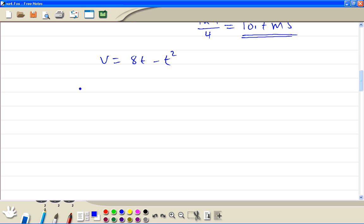So v equals 8t minus t². When t is 0, the velocity is 0. When t is 1, 8 minus 1 is 7. When t is 2, 16 minus 4 is 12. When t is 3, 24 minus 9 is 15.